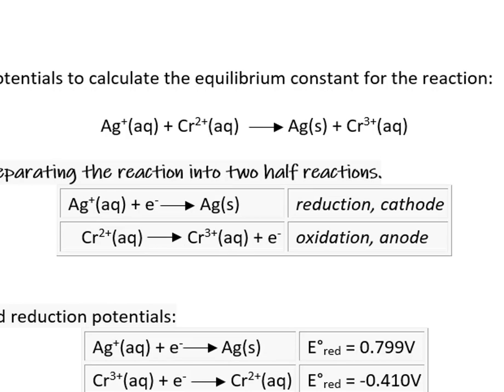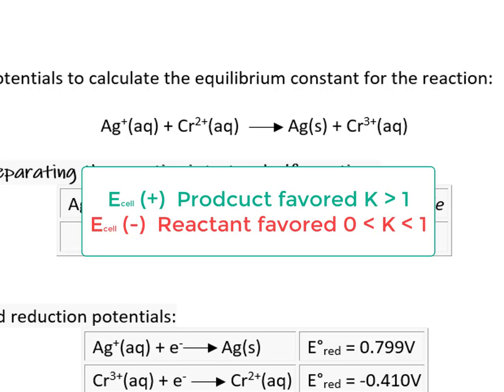If the reaction has a positive voltage, it will proceed forward to attain equilibrium, highly product-favored. If the reaction has a negative E°cell, it will proceed in the reverse direction, which is reactant-favored, and the equilibrium constant would be small, between 0 and 1.